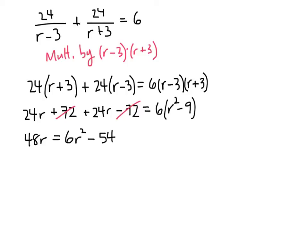As usual when solving quadratic equations, we want to get everything to one side. So let's just subtract 48r from both sides. That gives us 6r squared minus 48r minus 54.